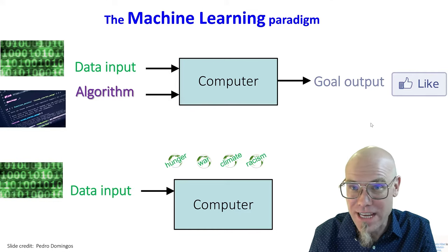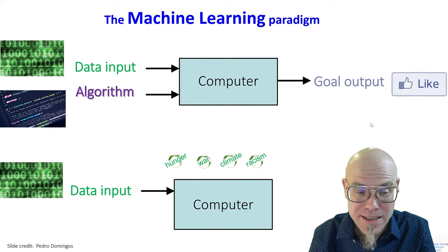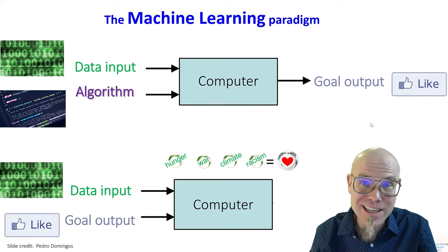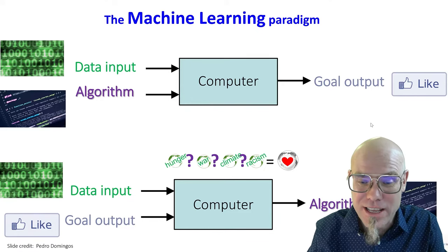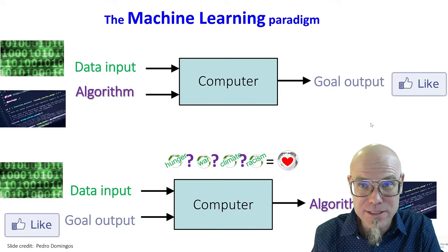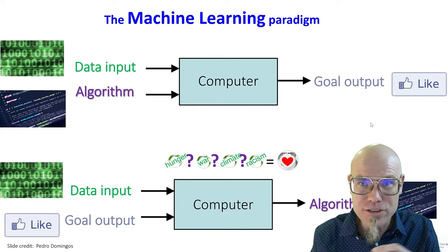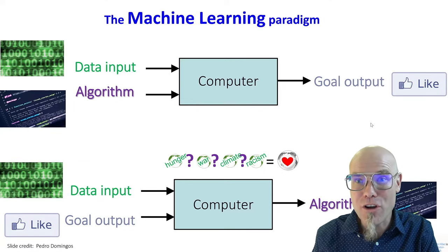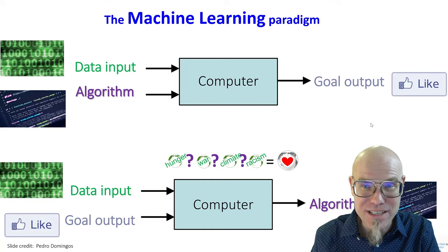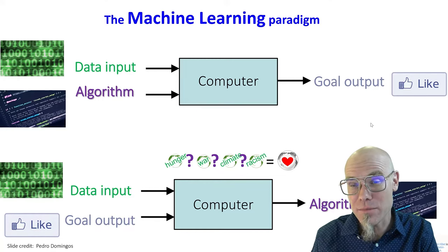Now we have some kind of data — we observe reality, there's a world with a lot of problems. We define the goal: we want a better world. Then we ask machine learning how best to go about that, and it tells us the recipe for how to combine observations with where we want to go. That's why Peter Dominguez calls it the master algorithm — the algorithm that computes algorithm recipes.